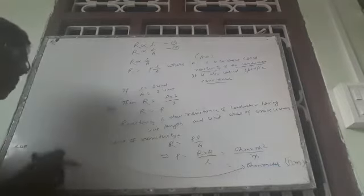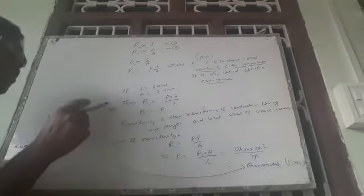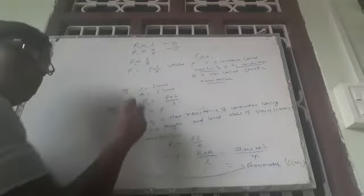Resistivity is nothing but resistance. Under which condition? If the length of wire is 1 unit, 1 meter, and area of cross section of the wire is 1 meter square. So we can define resistivity or specific resistance in this way.